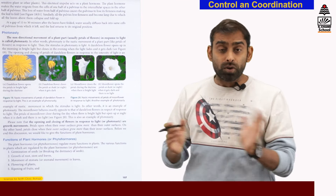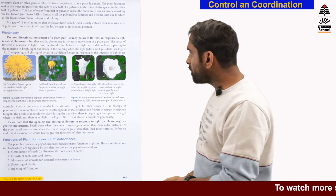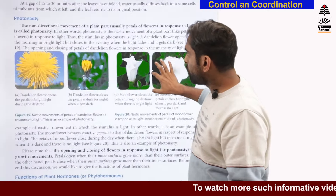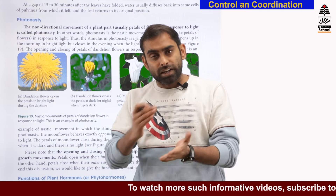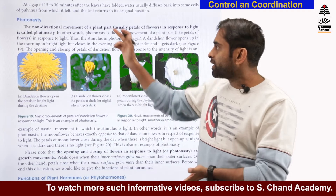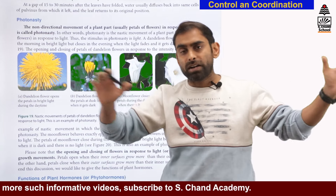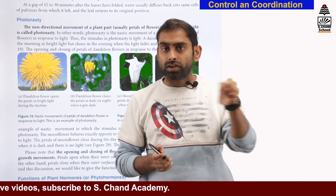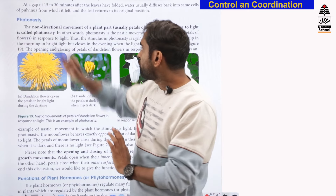That was thigmonasty — the nastic movement caused by touch. There is another example called photonasty. In photonasty, light plays a role and controls the movement of the plant. But unlike phototropism, here the movements do not have a direction. It does not matter from which direction the light is coming; what matters is whether light is present or absent. If the presence or absence of light controls the movement irrespective of direction, that is called photonasty.